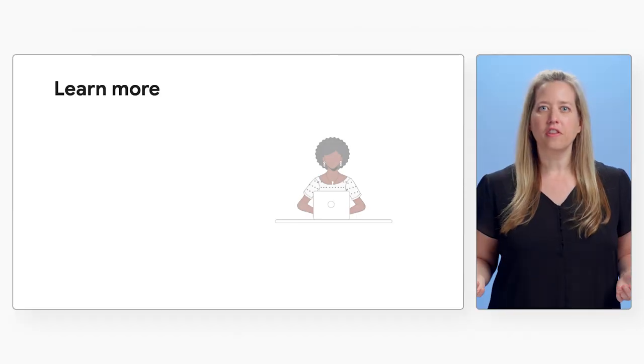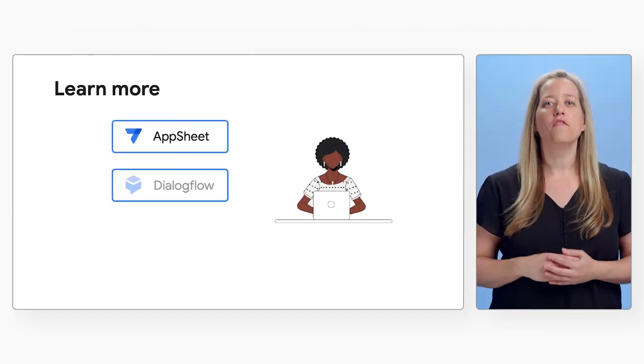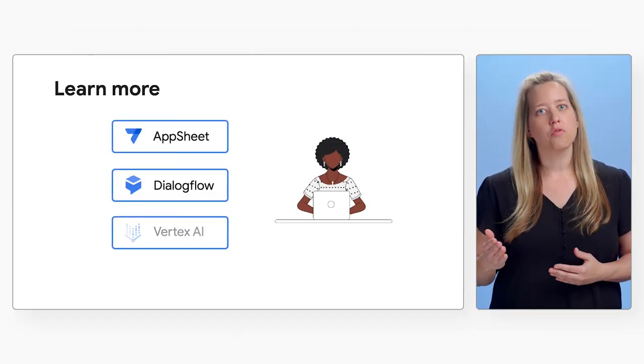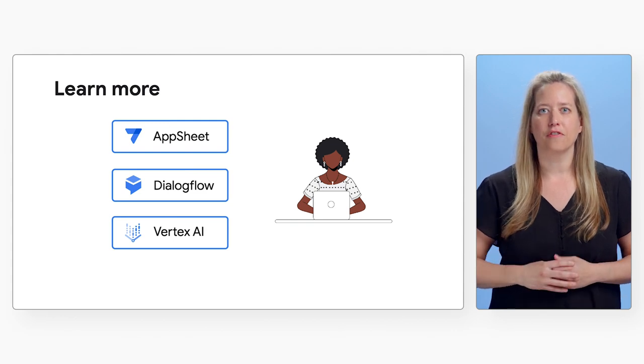We hope these new capabilities of AppSheet inspire you in thinking about how you might incorporate generative AI into the evolution of your own applications. From intelligent assistance to personalization, acceleration to extensibility, generative AI is fueling big leaps in innovation, and Google Cloud is ready to help you take those steps. Check out the links in the description below for more information on AppSheet, Dialogflow, and Vertex AI.